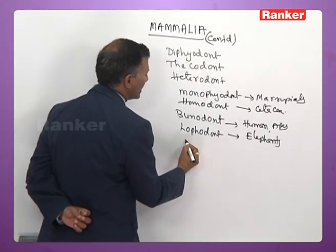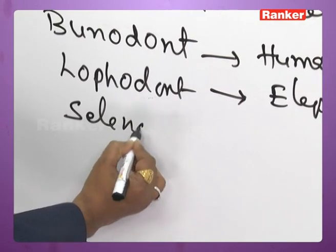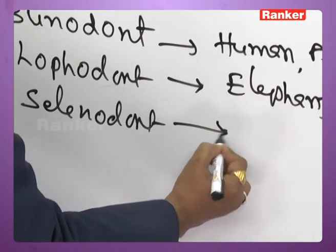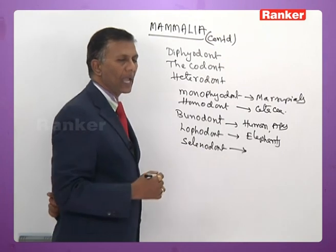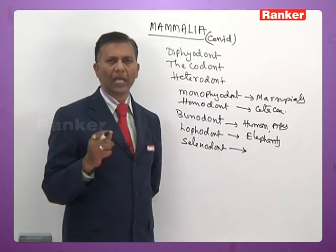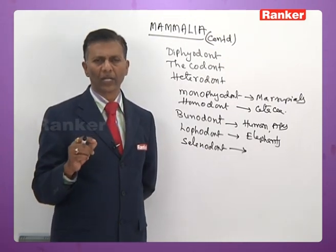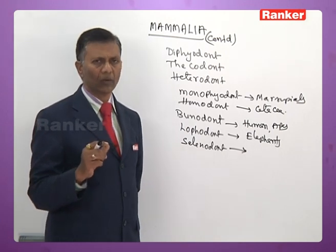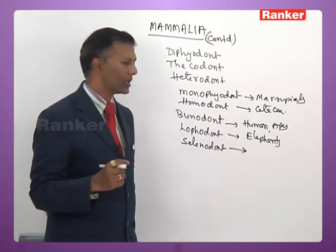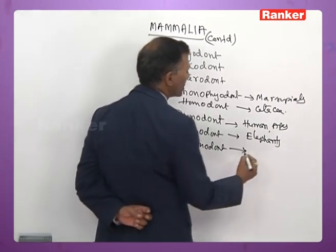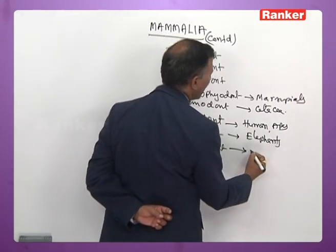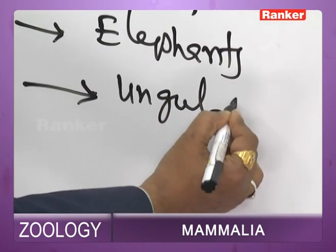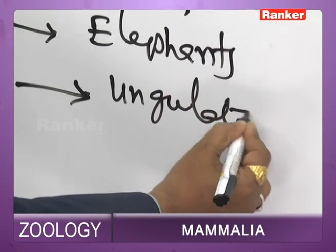Selenodont dentition is found in cattle, sheep, and similar animals, where the cusps are very large and meant for mastication. The crown part is also large. Selenodont dentition is found in ungulates — ungulates have selenodont type of dentition.